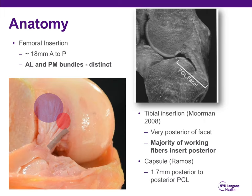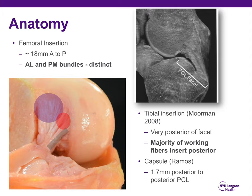Now we'll get into other ligaments of the knee, starting with the posterior cruciate ligament. In terms of anatomy, the PCL is a very broadly inserting ligament on the medial femoral condyle, about 18 millimeters from anterior to posterior. It has an anterolateral bundle and a posteromedial bundle, which are relatively distinct. The anterolateral bundle is bigger, thicker, and biomechanically more important, though there is synergy between the two bundles. The tibial insertion is very posterior — almost at the level of the capsule, only about 1.7 millimeters away — highlighting just how posterior that ligament is.